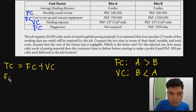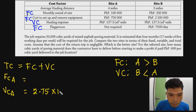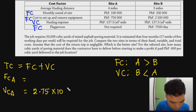Total cost for Site A: fixed cost of 1,150,000 plus variable cost of 27,500,000 equals 28,650,000 pesos.